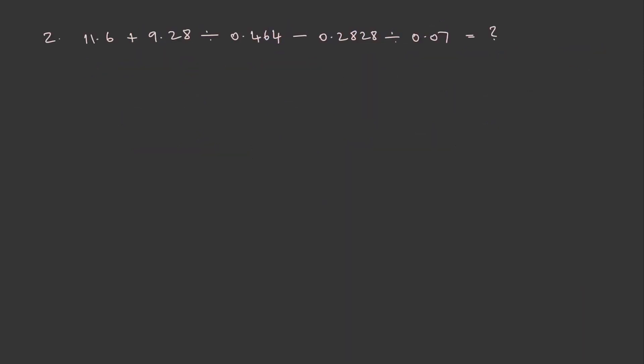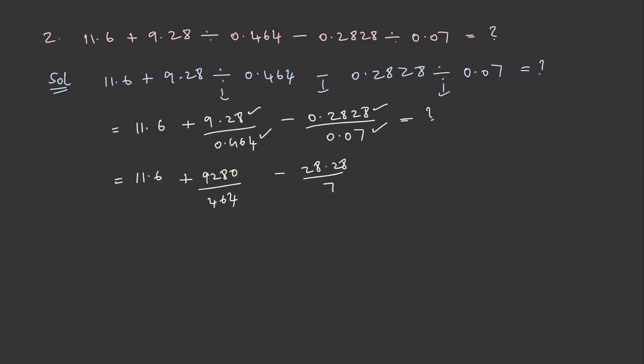Let's solve another question. First, let's write the given expression. Here there are no brackets given, but we need to know the order of arithmetic operations. So this can be written as 11.6 plus 9.28 by 0.464 minus 0.2828 by 0.07. We will find out this value. On converting these two into fractions we get 11.6 plus 9280 by 464 minus 28.28 by 7. On converting these two as well we get the following form, and this on further simplification will be 11.6 plus 20 minus 4.04, which will be equal to 27.56. This is how you solve the general questions in simplification.